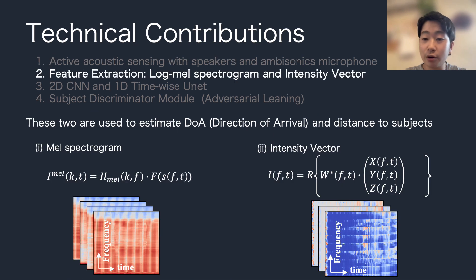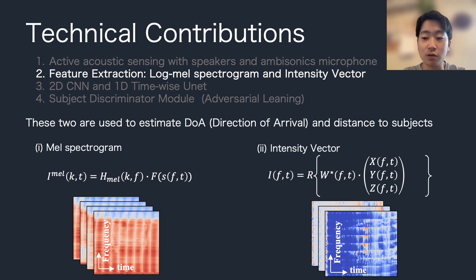The second point is acoustic feature extraction. We use mel spectrogram and intensity vector. Mel spectrogram represents sound amplitude at each time frame and frequency bin in mel scale. Intensity vector indicates the acoustic energy direction of a sound wave. These two features are concatenated along the channel axis, so the final input for our model has seven channels in total.